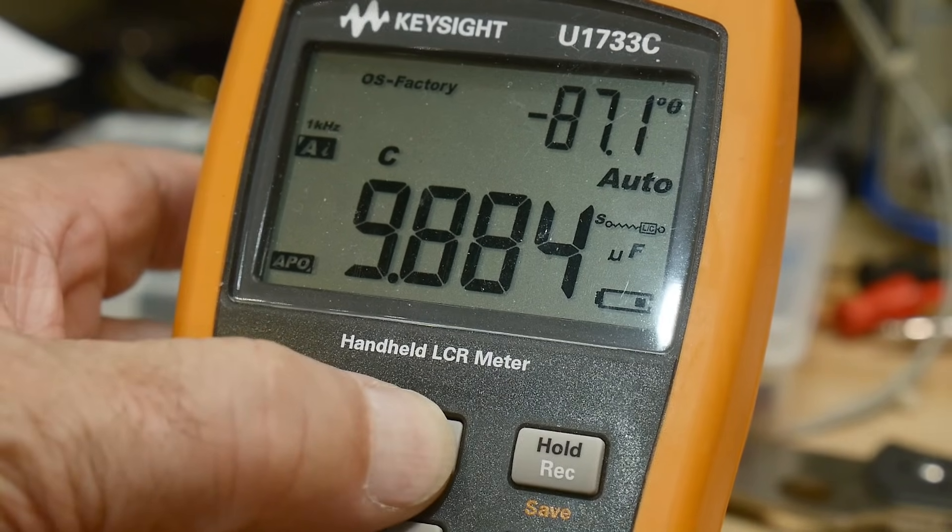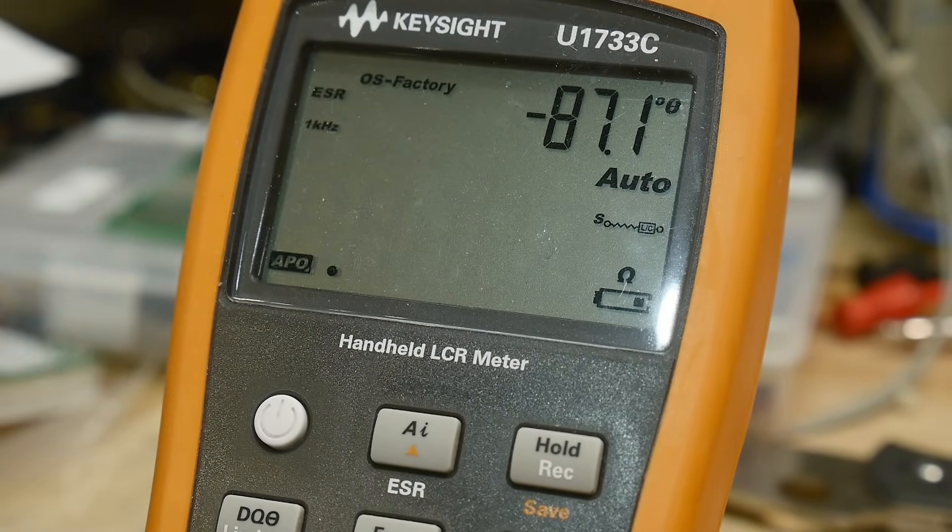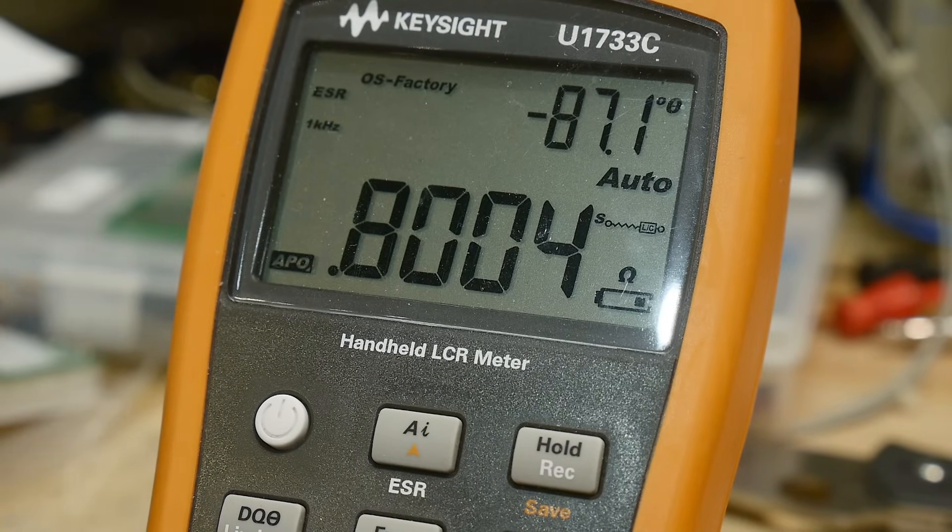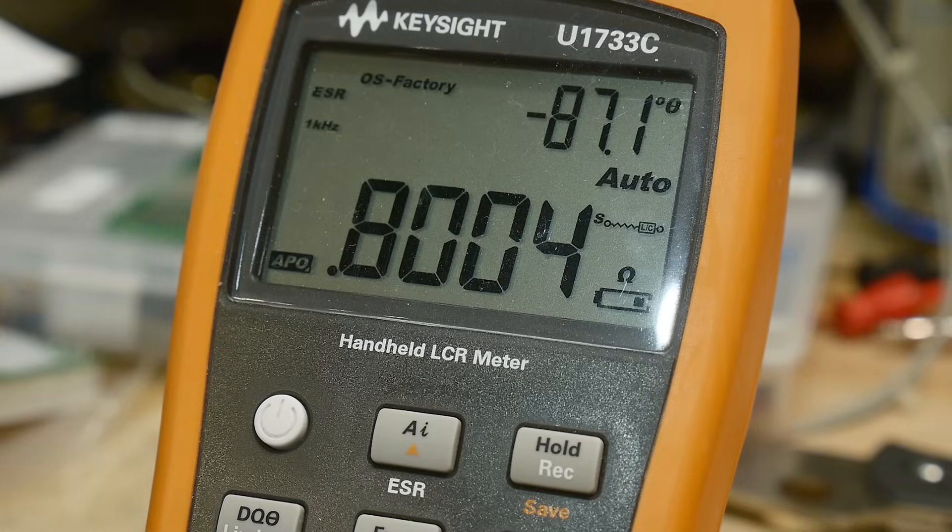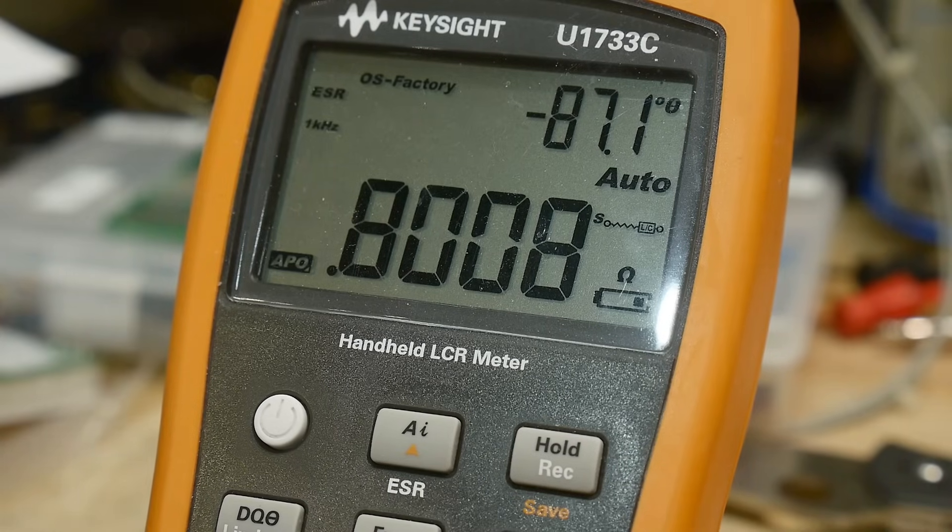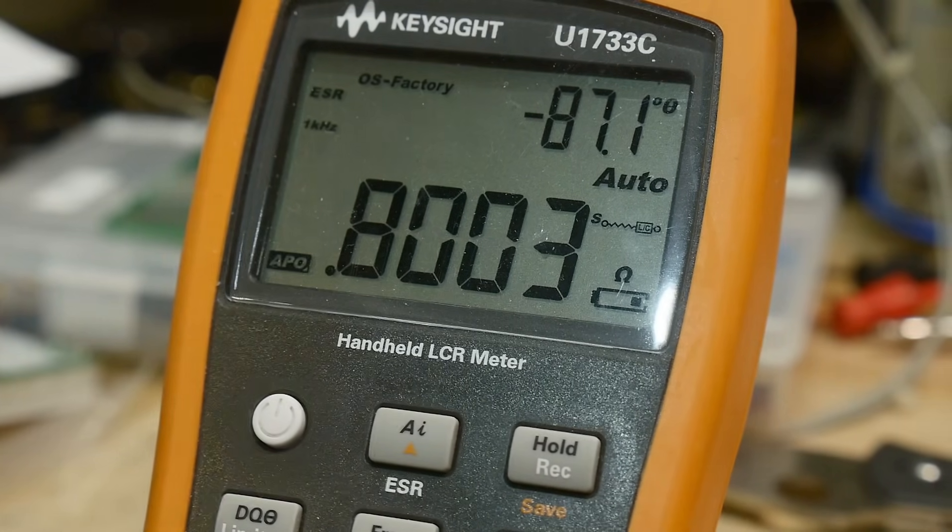And then we'll make an ESR measurement on it and it's 0.8 ohms. So 800 milliohms. 800 milliohms is not a few milliohms, it's 800 milliohms. But that's still pretty good, right? All right, so let's measure the next one here.